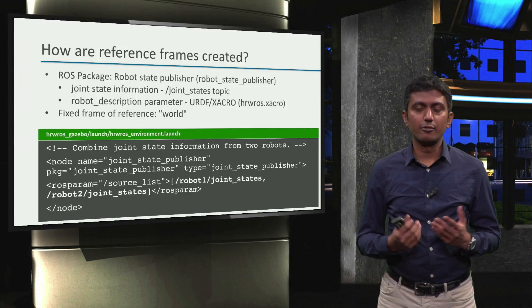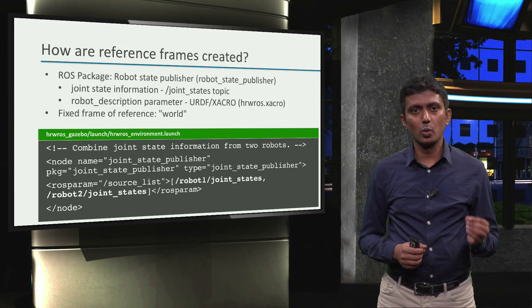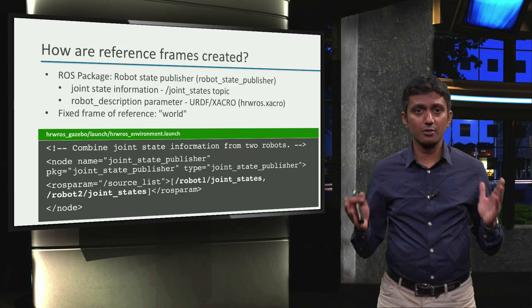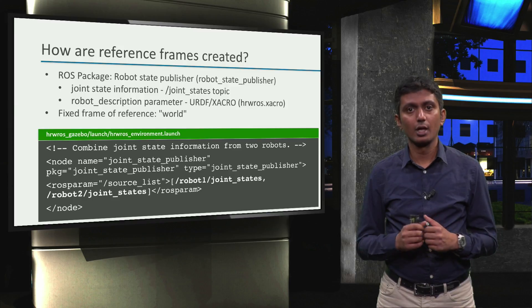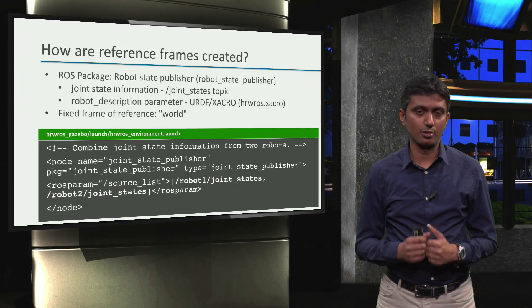This is achieved via the source_list parameter. As you can see, the robot1_joint_states and robot2_joint_states are elements of the list of topics that contain joint state information. And joint state publisher will publish the combined information onto the joint states topic.